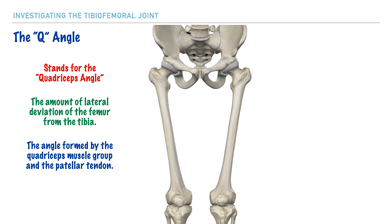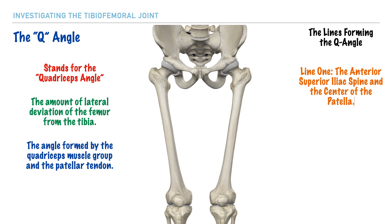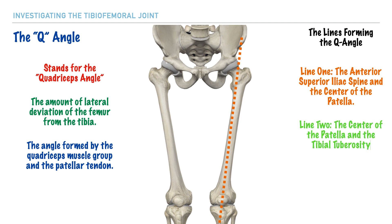Regardless of the definition used, the Q-angle is formed by two lines. The first line is from the anterior superior iliac spine of the hip — the ASIS — to the center of the patella. The second line is from the center of the patella to the tibial tuberosity. We extend this second line upward to better visualize the angle being formed. Right in between these two lines is our Q-angle, and it's helpful to know that we can measure this angle.